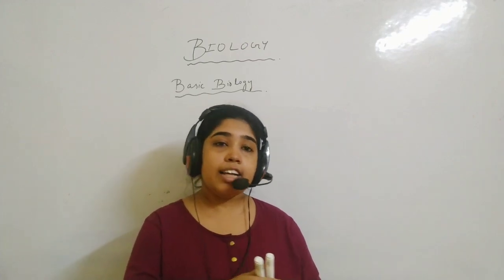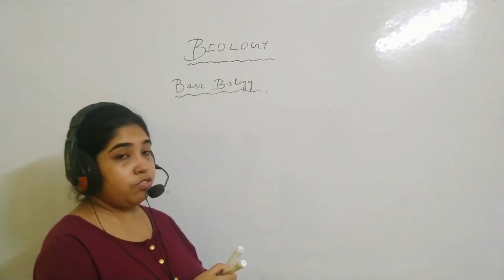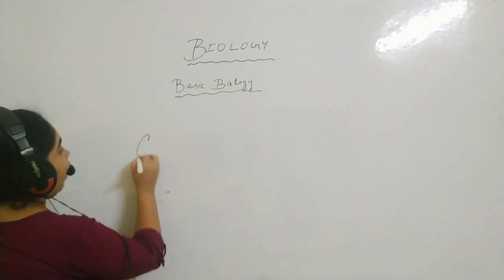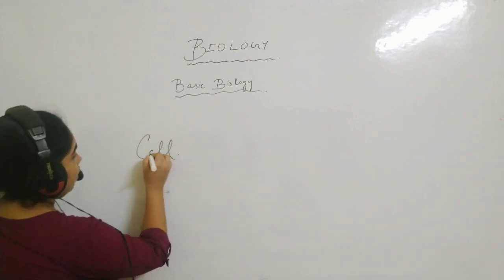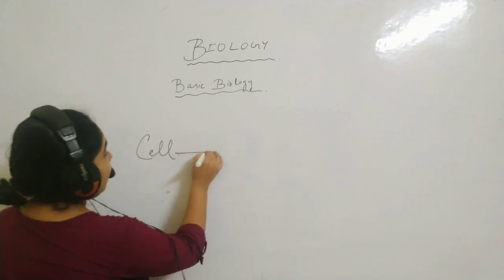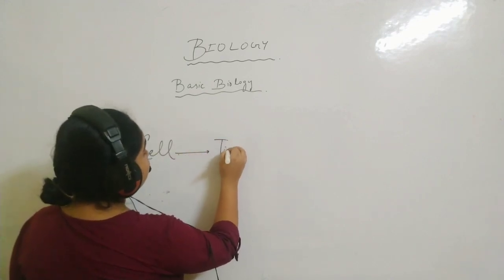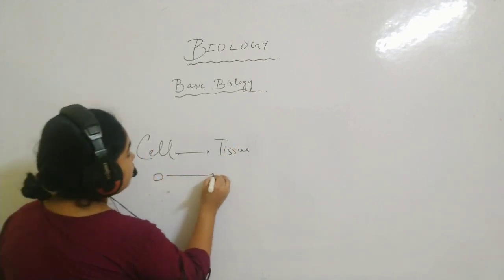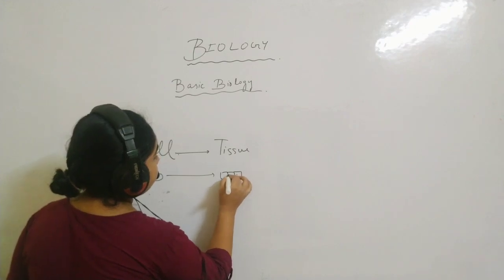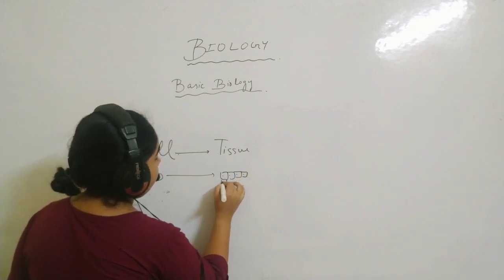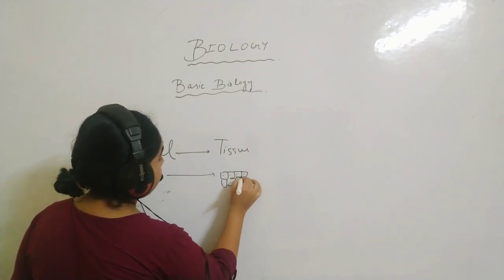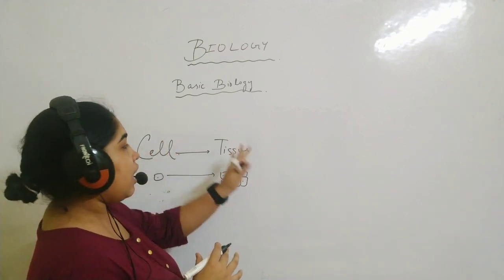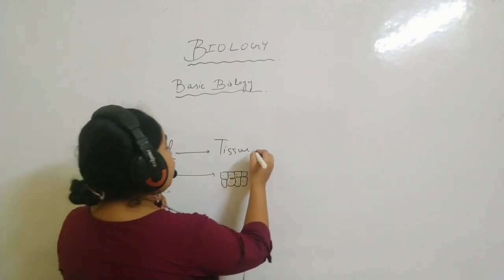Before I go into cell, I want to explain a few important things. Our life starts from a single cell. From the cell, tissue forms. Cell means suppose this is one cell. What is tissue? Tissue means it is a bundle of cells — a bunch or bundle of many cells forms a tissue.